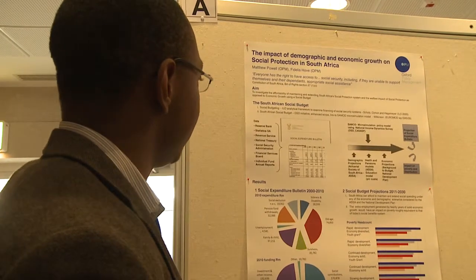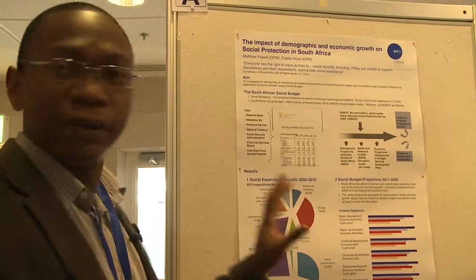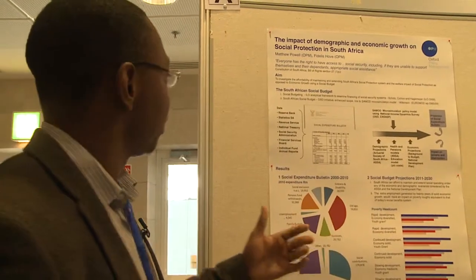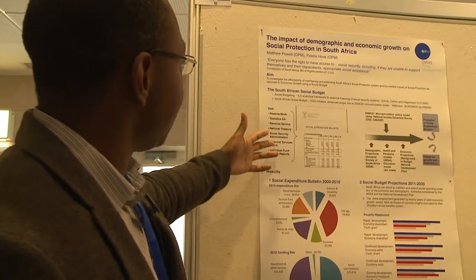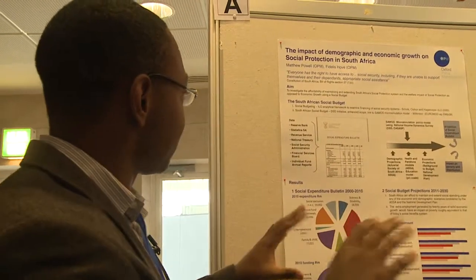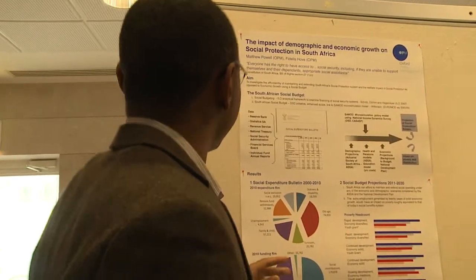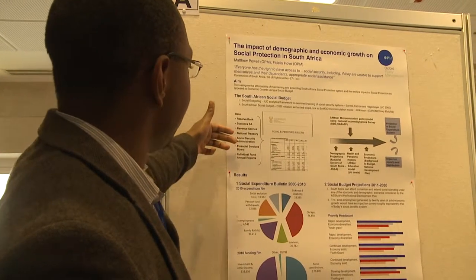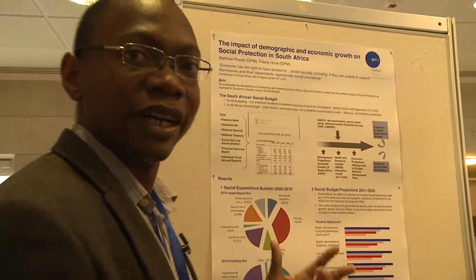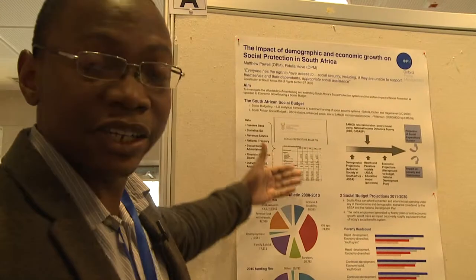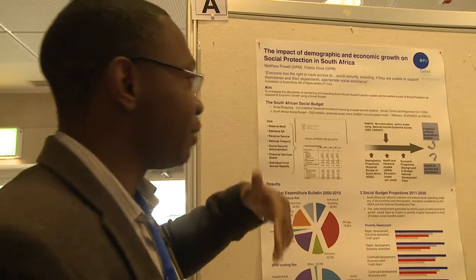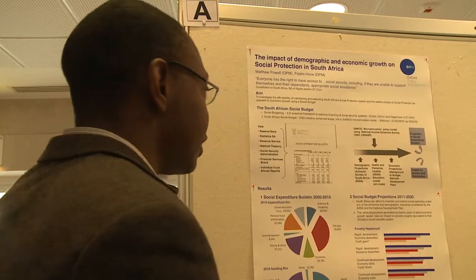The way we went about creating the social budget, following the ILO methodology, involved two components. The first is a social accounting system — essentially an Excel-based framework for bringing together data from different sources that allows us to systematically examine expenditure, revenue, and the numbers of beneficiaries for all the institutions and schemes involved in social protection in South Africa.